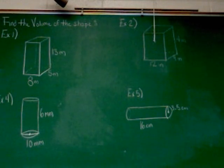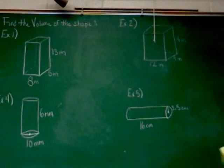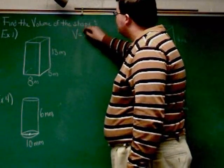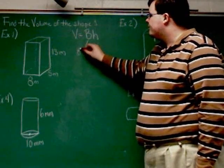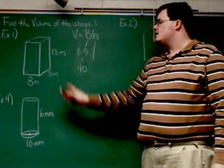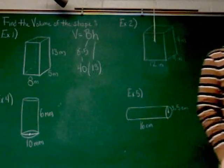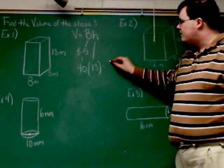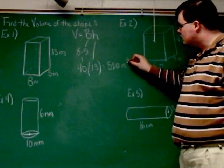Example one is a prism. When we're talking about a prism, ideally the base is whatever it's sitting on — in this case the bottom. Volume equals base times height. B is going to be 8 times 5, which is 40. H is the height, the other number, which in this case is 13. So we're doing 40 times 13, which is 520, and that's going to be meters cubed.